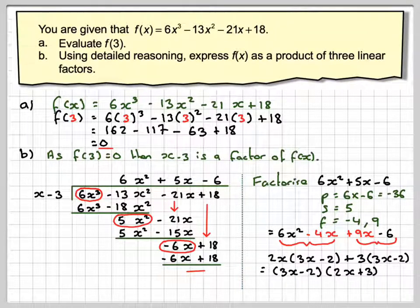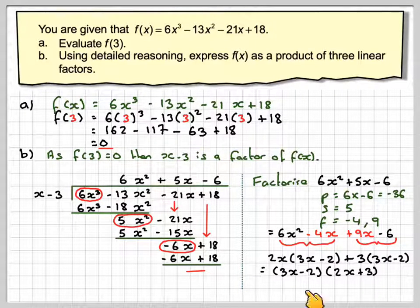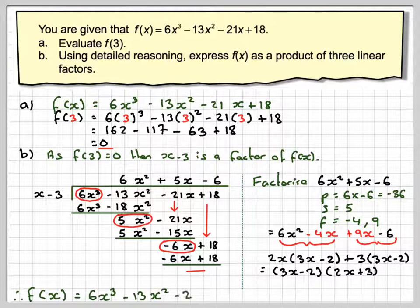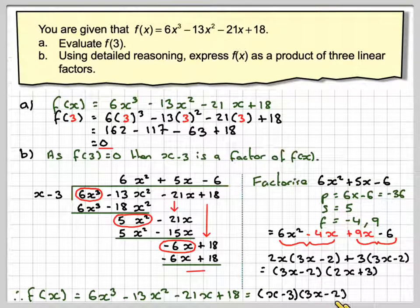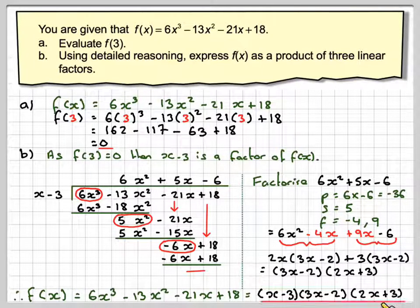So we now have the three linear factors: x minus 3, 3x minus 2, and 2x plus 3. So f of x is going to be equal to x minus 3, 3x minus 2, and 2x plus 3.